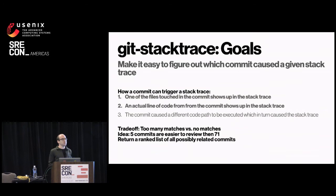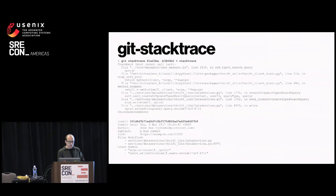When you put it all together, you run: git stack-trace, pass in the range of commits, pass in the stack trace via standard in, and ideally you see that John Doe's commit caused the stack trace.